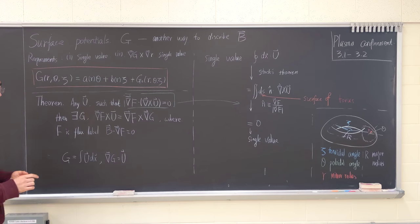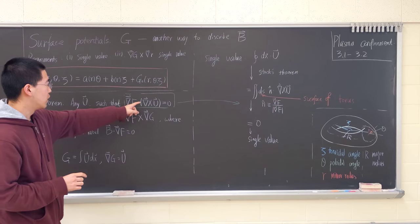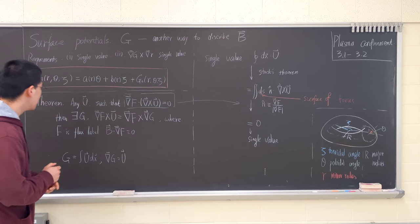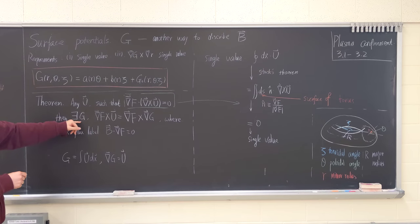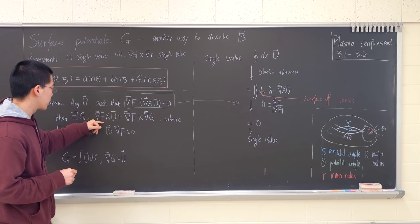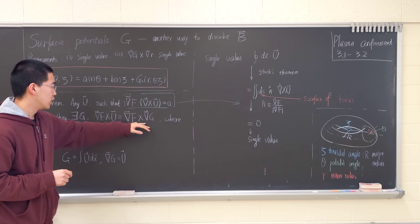There's a theorem for any U such that grad F curl V and curl U equals zero. There exists a G, a surface potential such that grad F cross U equals grad F cross grad G.